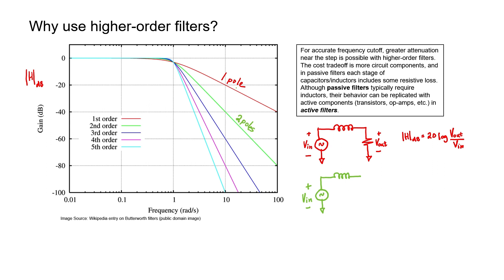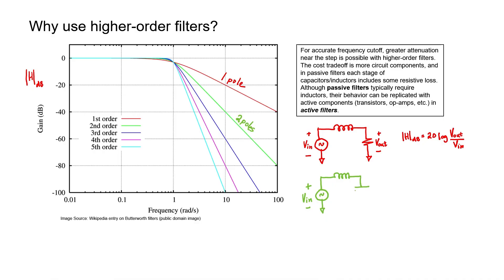How would you implement a two-pole filter? Could you just add another inductor in series? No — two inductors in series are mathematically the same as a single inductor, which only gives you one pole. To make a two-pole filter, you need two reactive elements that are not mathematically combinable in the circuit. For example, this is one potential way: the inductor blocks high frequencies trying to pass through, and those that do get through are shunted to ground by the capacitor. Both elements work together to block the high frequencies.